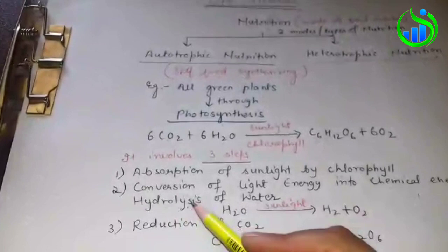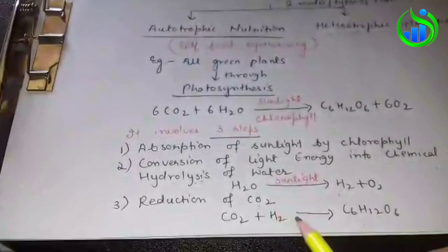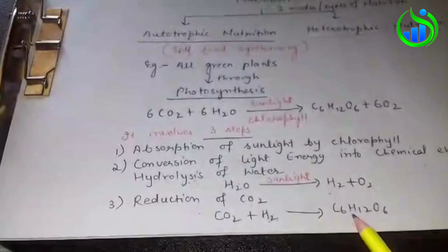Lysis means breakdown - water breaks down by sunlight into hydrogen and oxygen. Third step is reduction of CO2, that is reduction by hydrogen. Addition of hydrogen and removal of oxygen is known as reduction, so carbon dioxide plus hydrogen produces glucose.